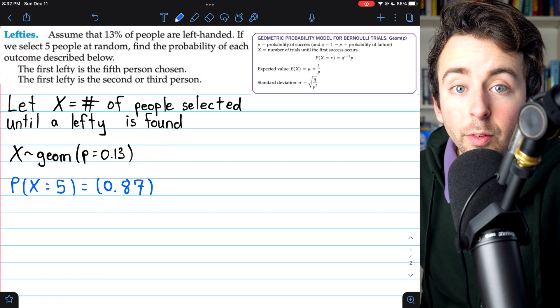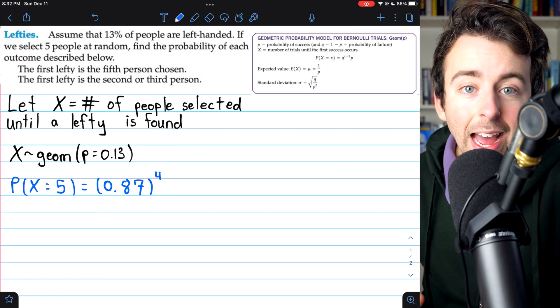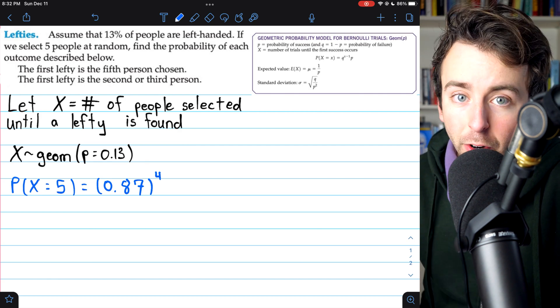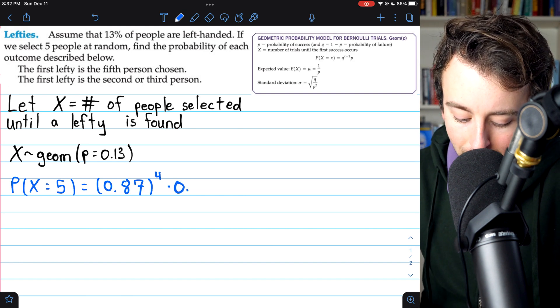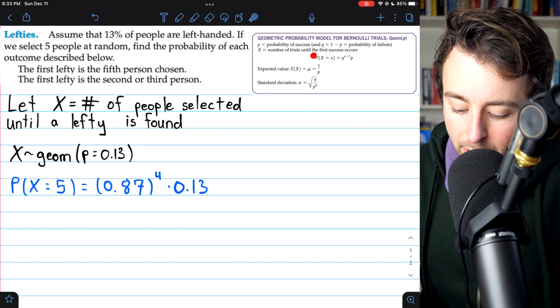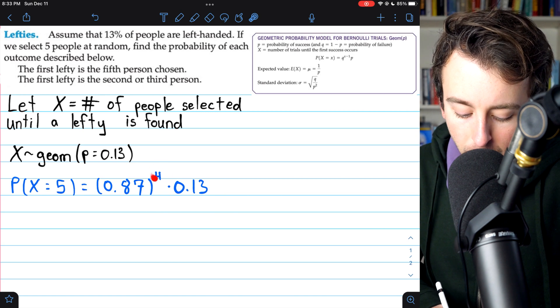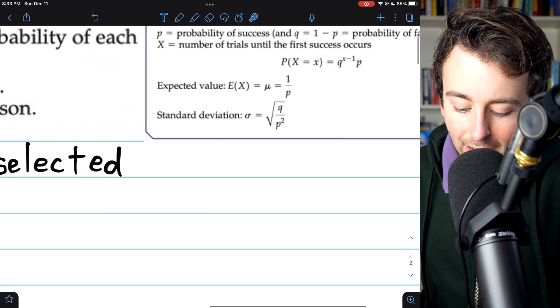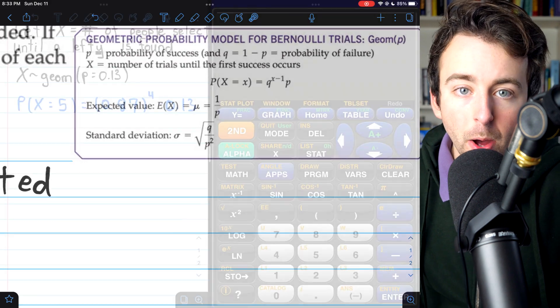So that's a 13% chance of success. So the probability of failure is 1 minus that or 0.87. So we need this probability of failure and we need it to happen four times. We need to have four right-handed people so that that fifth person will be the first lefty. And then of course, we need to multiply by the probability that we actually get that lefty on the fifth person. We have the probability of failure to the power of 5 minus 1, which is 4, multiplied by the probability of success. That's exactly what you see here for the PDF of the geometric model.